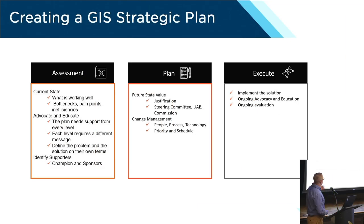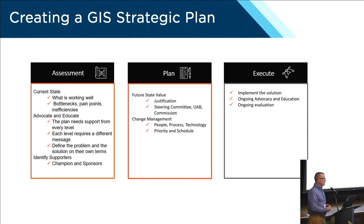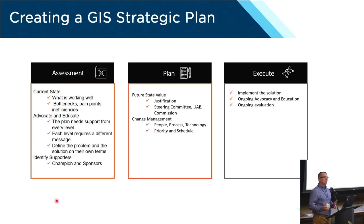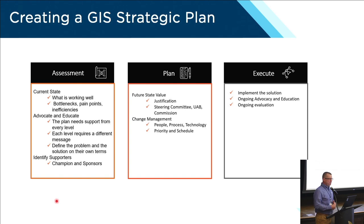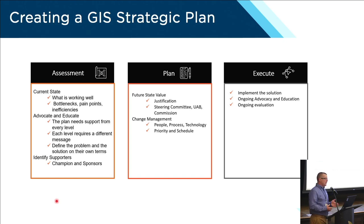I'm not going to explain how to create a GIS strategic plan — there are lots of great papers out there, Esri and industry leaders have published their own. This is just a consolidation of everything I read and put together. The general idea is assess, plan, and execute. And along the way, especially during execution, evaluate your plan. Things change — technology, leadership, new ideas. Ongoing evaluation was pretty critical.